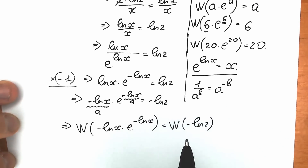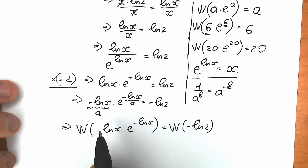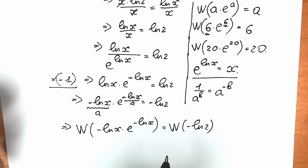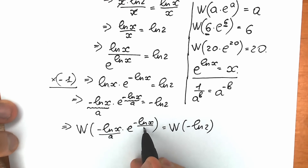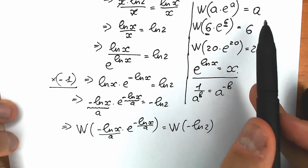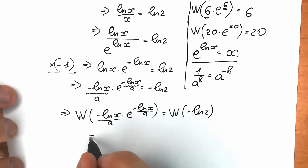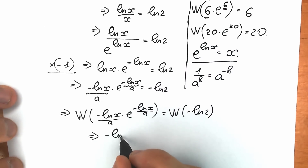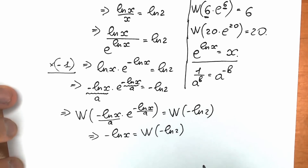Don't forget the right side — a lot of students forget to apply the Lambert W function on the right side too. We need to do absolutely the same step on both sides. As we established, negative natural log x is our a, and when we apply the Lambert W function, we get only our a. So we have: negative natural log x equals Lambert W of (negative natural log 2).